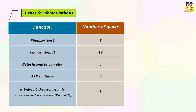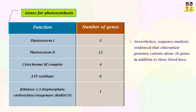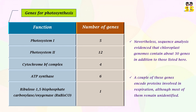The genes for photosynthesis are listed in this table. Chloroplast DNA encodes approximately 30 proteins involved in photosynthesis, including components of photosystems 1 and 2, cytochrome bf complex, and ATP synthase. It also encodes one of the subunits of Rubisco. Additionally, chloroplast genomes contain another 30 genes not listed here. A couple of these genes encode proteins involved in respiration, although most of them remain unidentified.